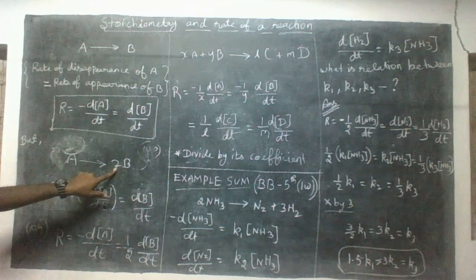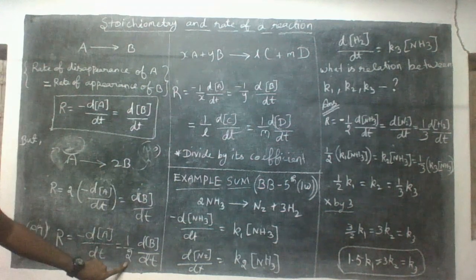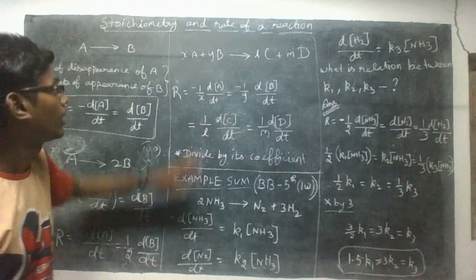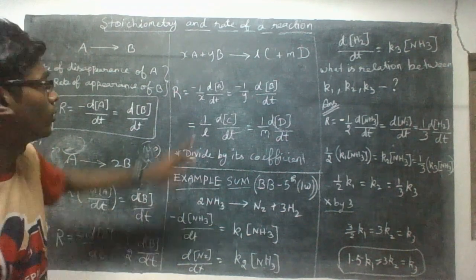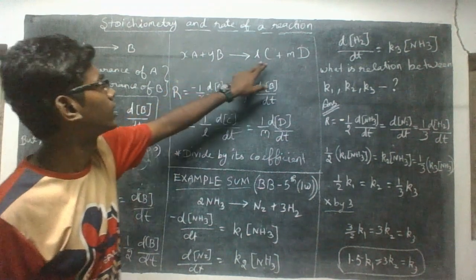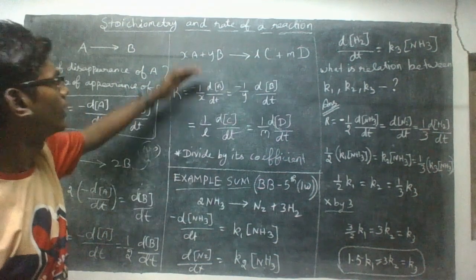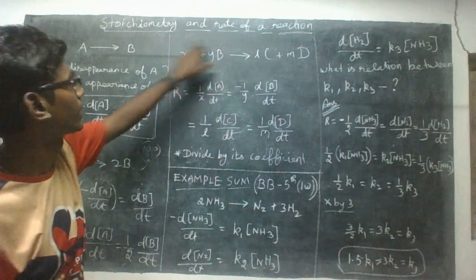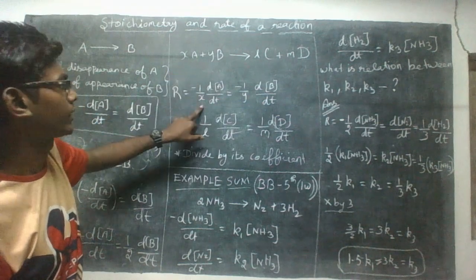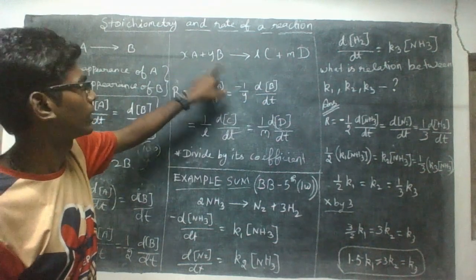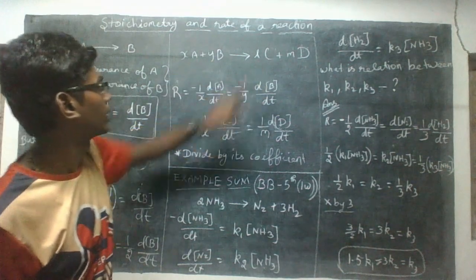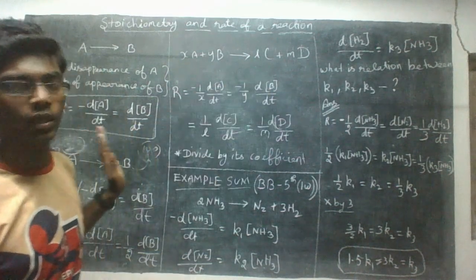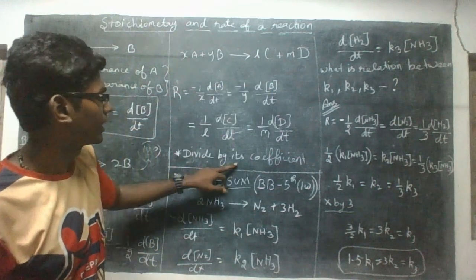B is equal to 1 by 1, very simple. B is equal to 1. After that we take the calculation — 1/x, 1/y, 0/y. Let's divide by its coefficient.